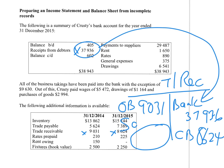The missing sales figure will be the difference, appearing on the debit side. We add up the credit side: 37,936 plus 8,624, then subtract the opening debit balance of 9,031 to get the answer. Let's look at the next slide.